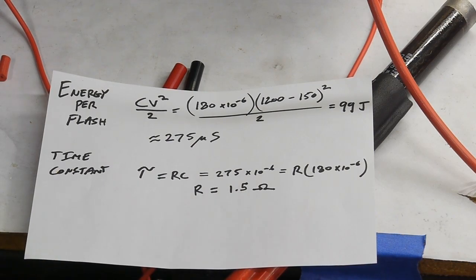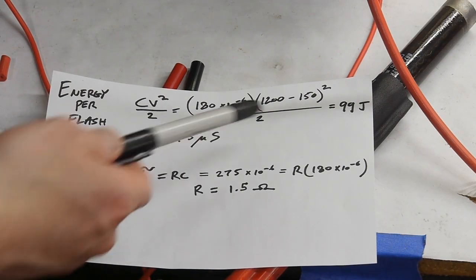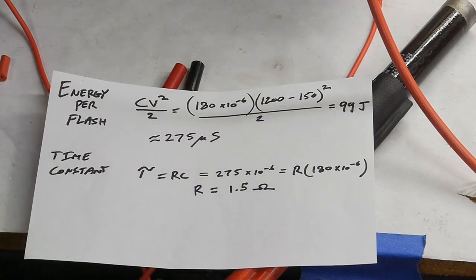For flash tubes the effective resistance actually depends on the amount of current going through the flash tube so there's this k constant that describes what the effective resistance is depending on the current flow. In this case the current flow is probably not all that much since it's a relatively low power pulse.